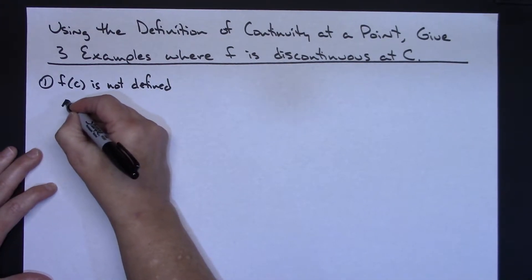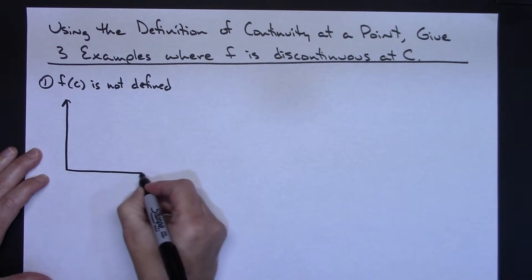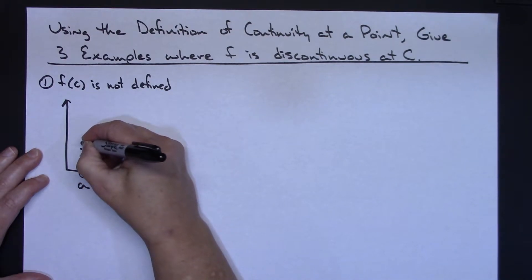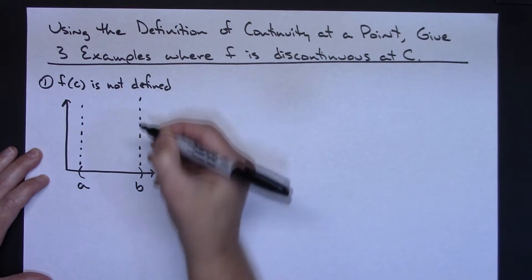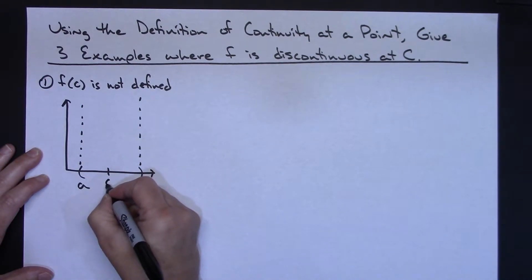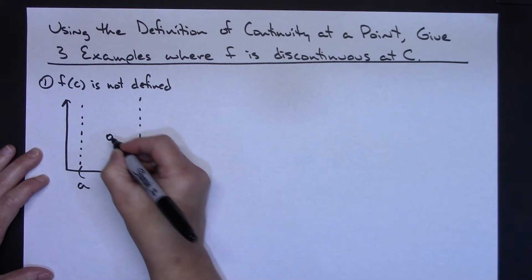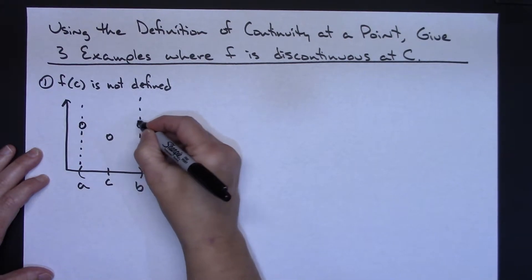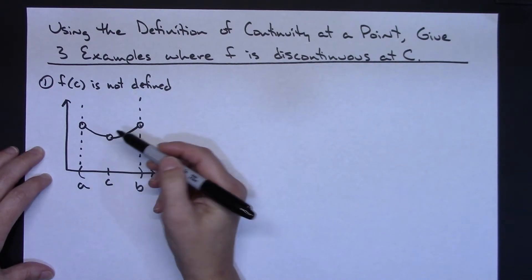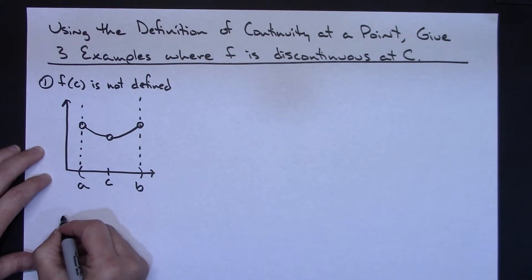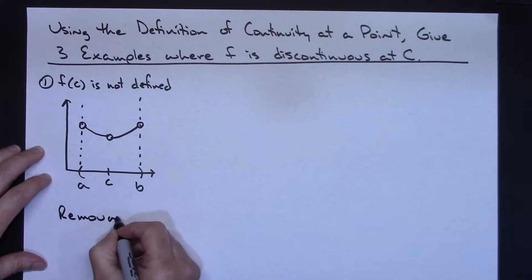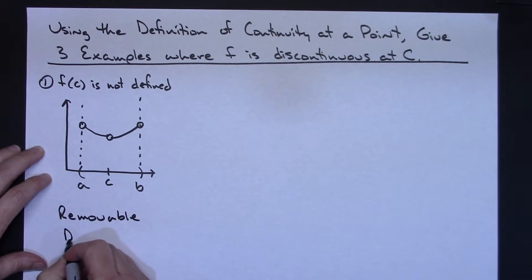If I were to sketch a picture of this, I would consider the open interval from a to b. If f of c is not defined, then I would have to have a hole at where f of c is. So if my c was right here, I would need an open hole — that being a removable discontinuity.